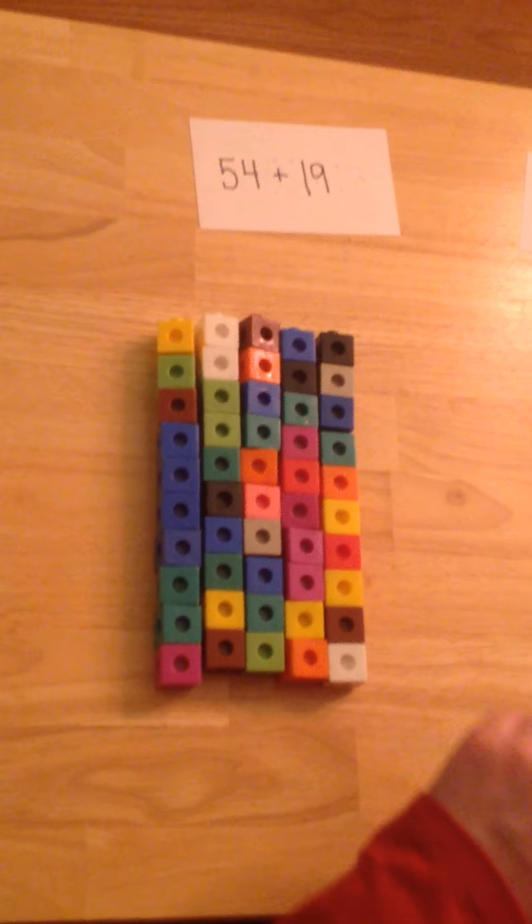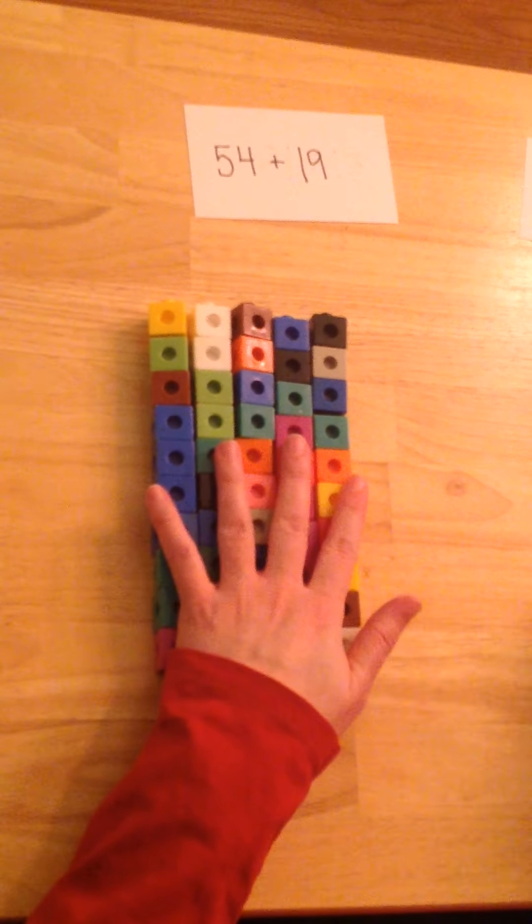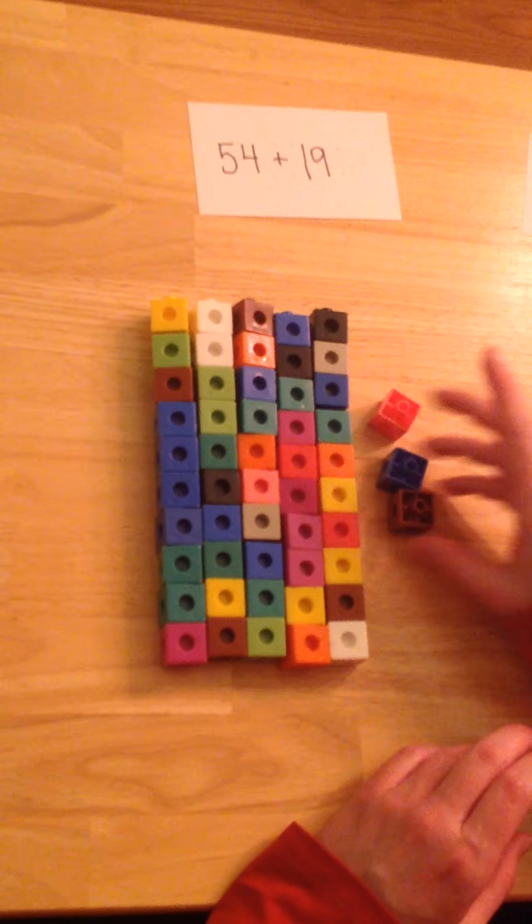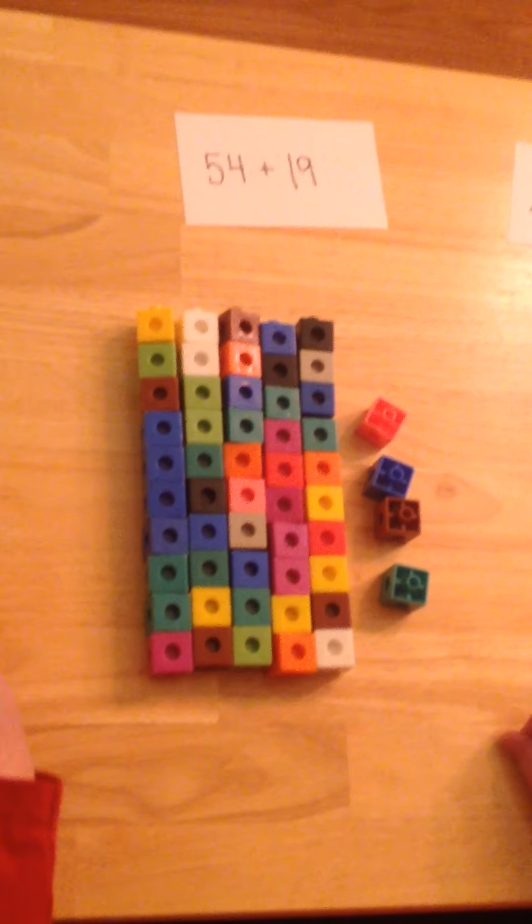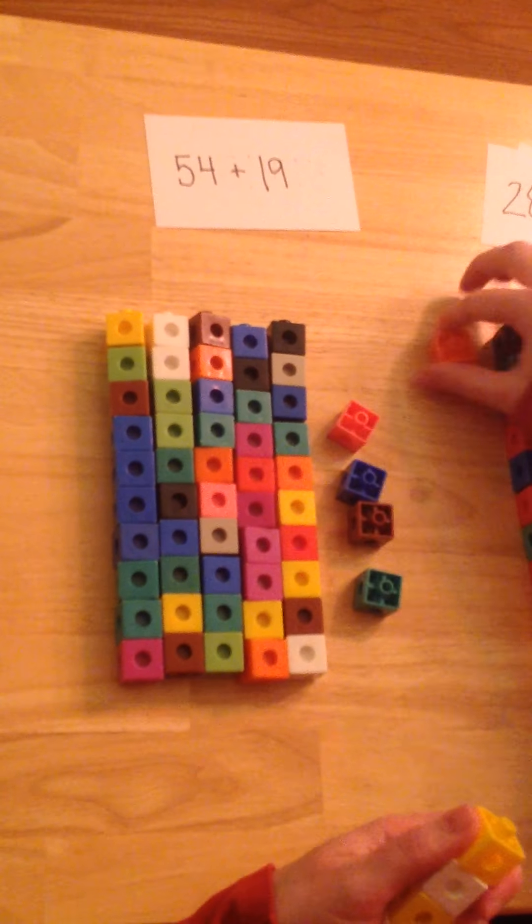Next we're going to do 54 plus 19. 10, 20, 30, 40, 50. And 4 1s for 54. And 1, 10. And 1, 2, 3, 4, 5, 6, 7, 8, 9 for 19.